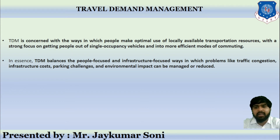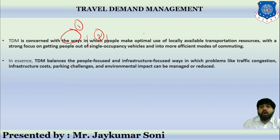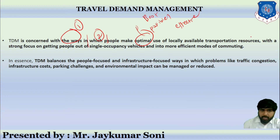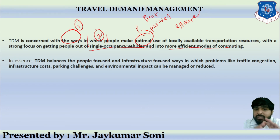Next comes travel demand management. Travel demand management is concerned with the ways in which people make the optimal — that is, best possible — and effective use of locally available transportation resources. It has a strong focus on getting people out of single-occupancy vehicles and into more efficient modes of commuting. That means it focuses on maximum utilization of public transport and minimum use of single-occupancy vehicles.